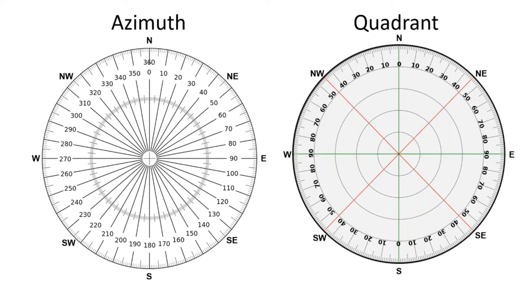Welcome to the channel. Today we will learn two types of direction angle reading methods: azimuth and quadrant method.